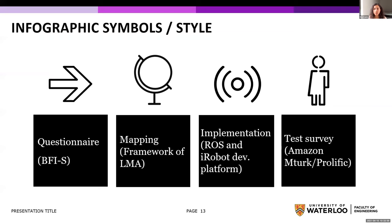The study design has four steps. First, a questionnaire based on the Big Five Inventory to determine people's perception of robot behavior. Second, mapping personality characteristics to robotic motions using Laban Movement Analysis and effort features. Third, implementing those robotic motions to the vacuum cleaner using iRobot Create 2 programmable robot with ROS coding language. The last step is a test survey using Amazon Mechanical Turk or Prolific, focusing on how well people can distinguish the robot's inner states.